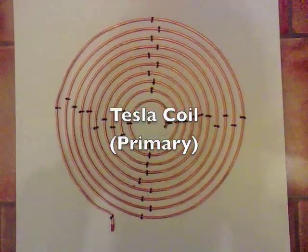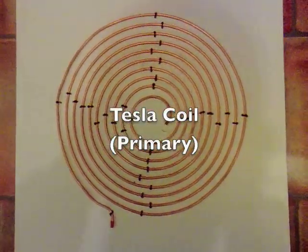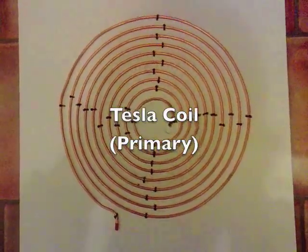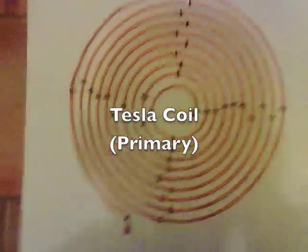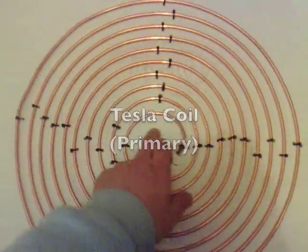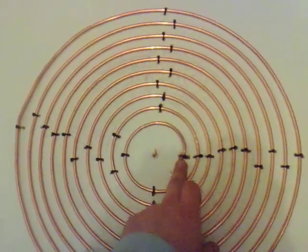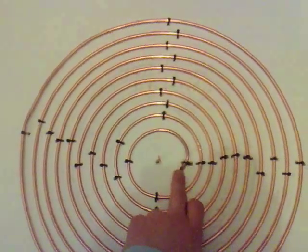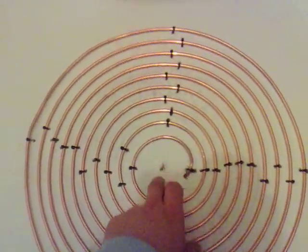Right, I've managed to get my primary here. Now what I've done is I've made sure that the center here won't arc across. So we've got enough space to put the secondary in.